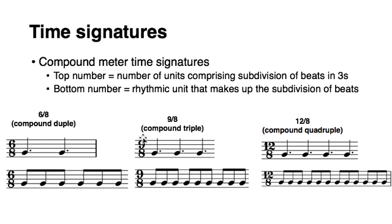In 9/8, we have 9 eighth notes per bar, but we have to group each 3 of them as a single beat. So you have 3 taking a beat, the next 3 is another beat, and the next 3 is another beat. So in consequence, we have 3 beats in 9/8. It's compound triple.